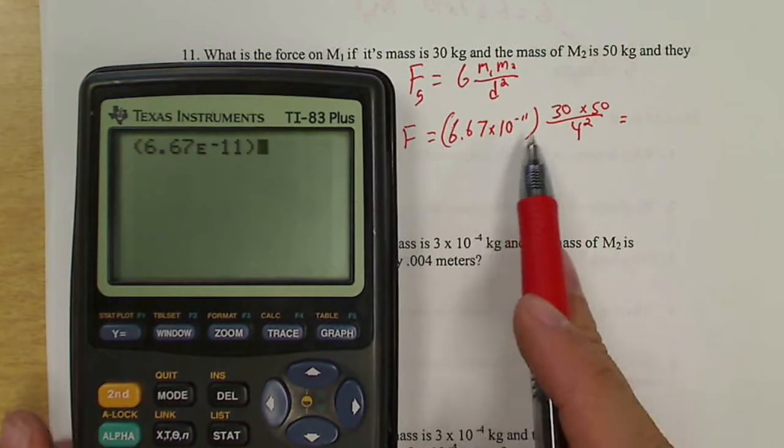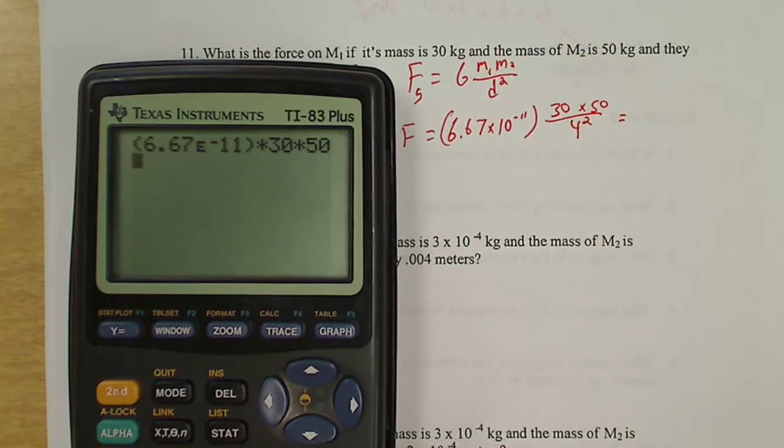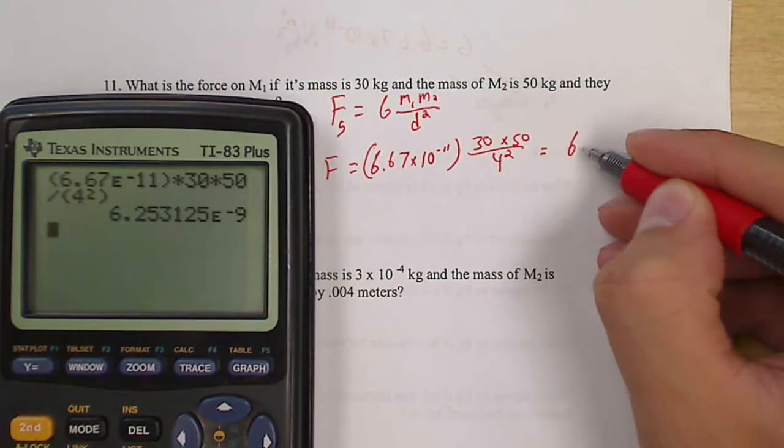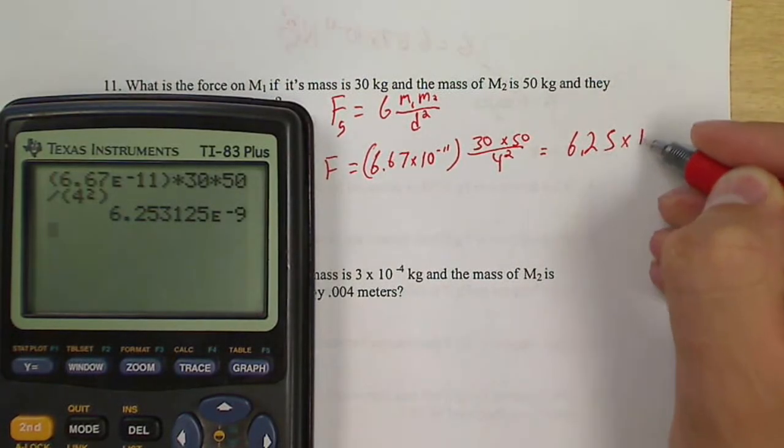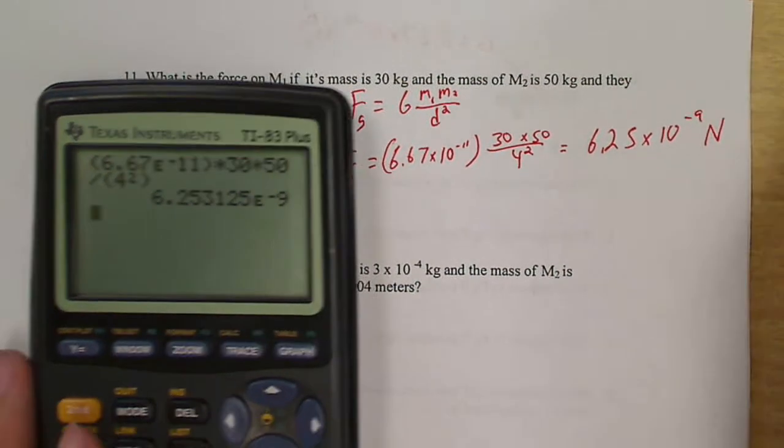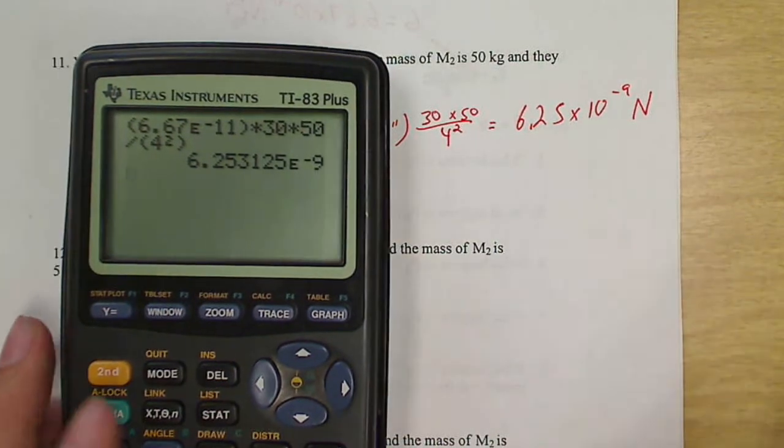So I'll do 6.67 E negative 11 times 30 times 50 divided by 4 squared. So that gives me my answer, which is 6.25 times 10 to the negative 9th newtons. So this E right here is this times 10 to the, that's how it's translated.